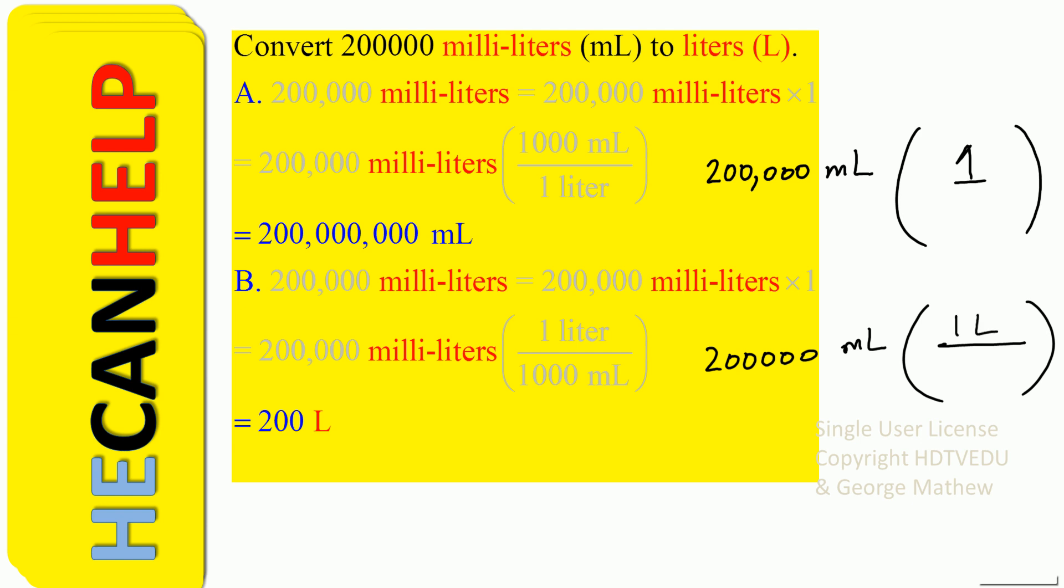We put one liter at the top and 1000 ML at the bottom. Why? So that ML and ML cancel out and we get our answer in liters.